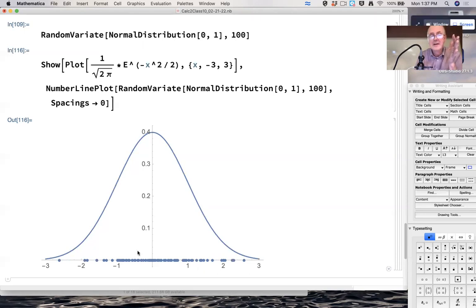Between negative two and two, the area under the curve is about 0.95, which means about 95% of the data is between negative two and two. There's 100 data points here. About five of them should be either less than negative two or greater than positive two.